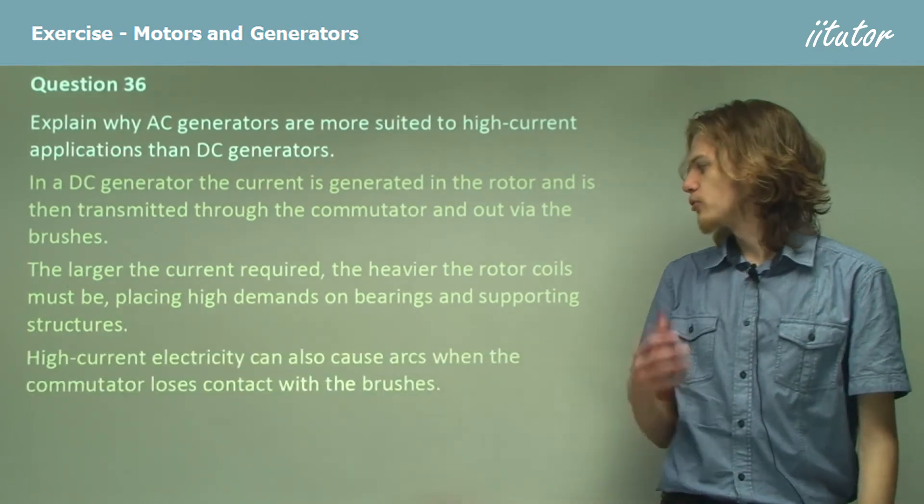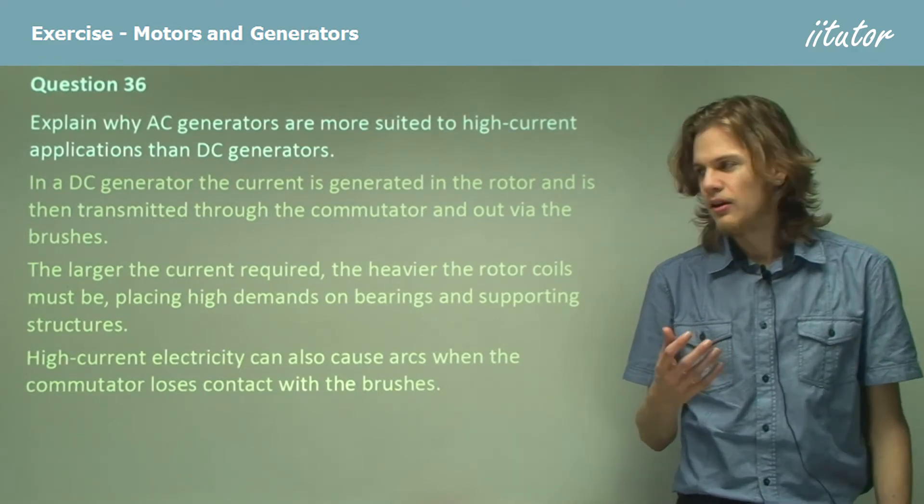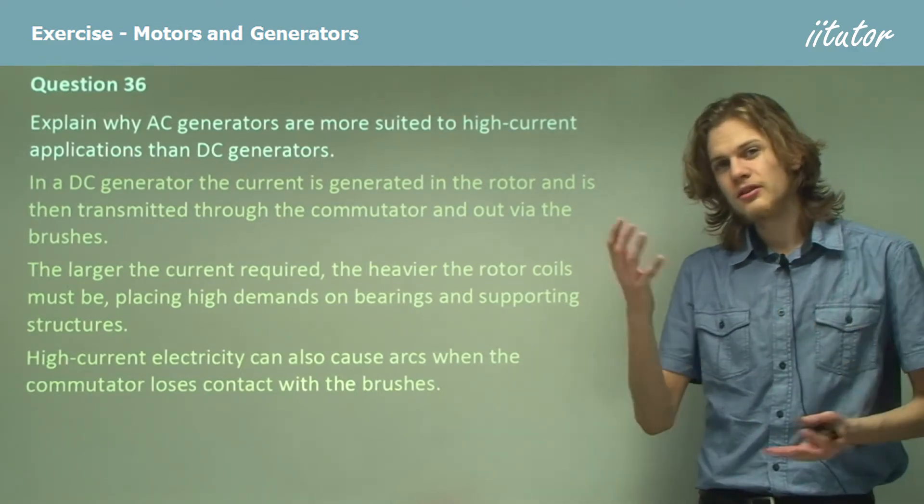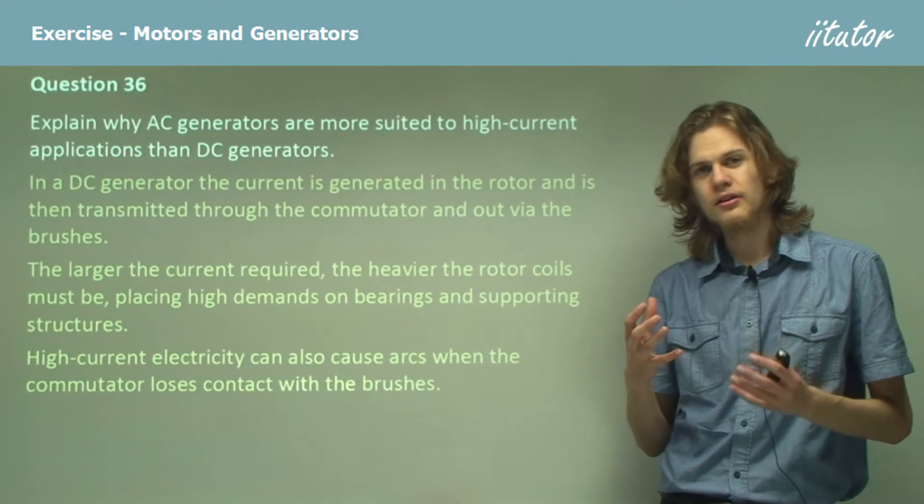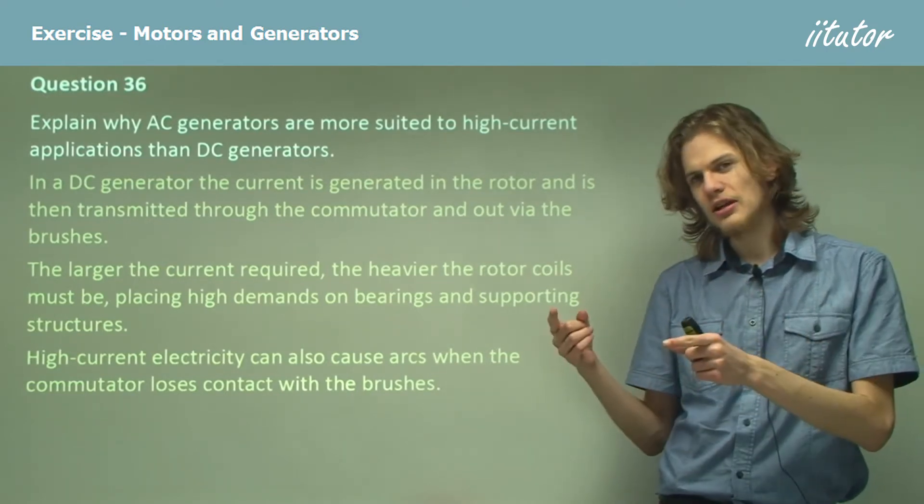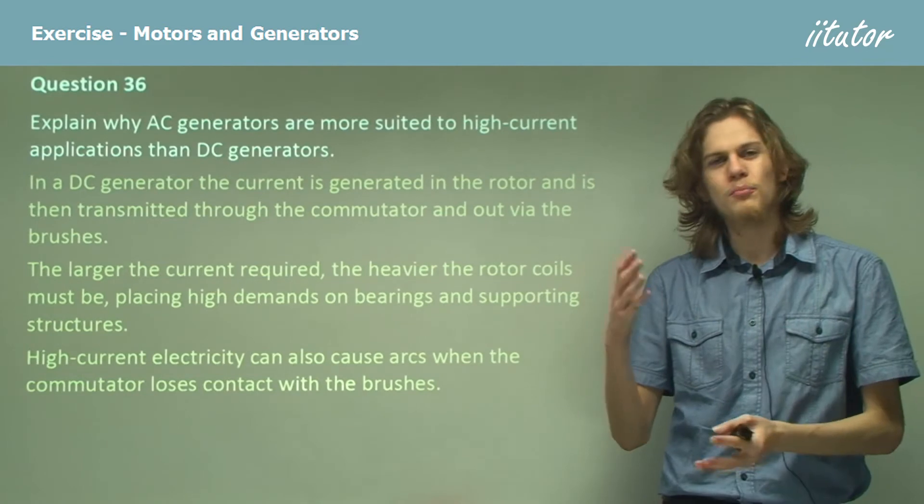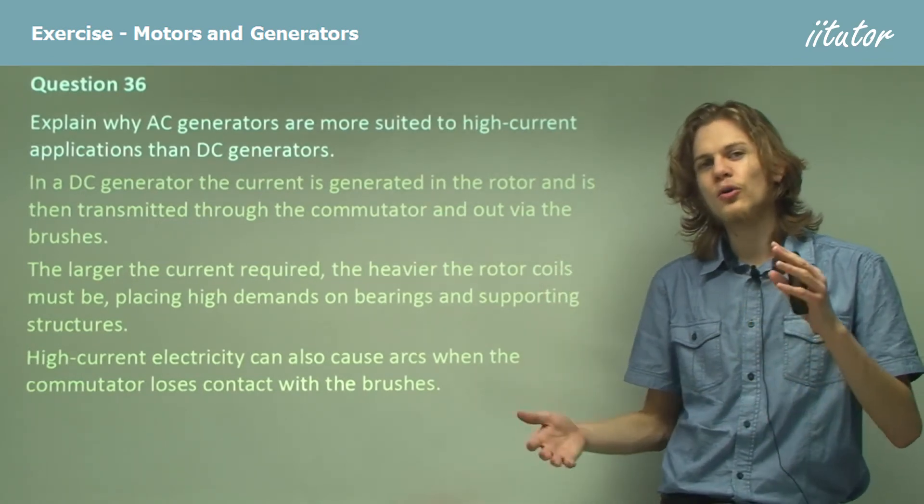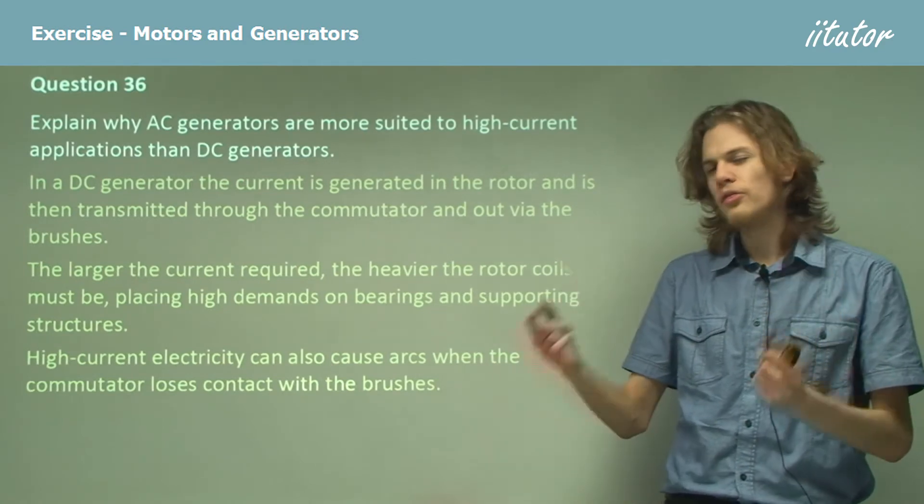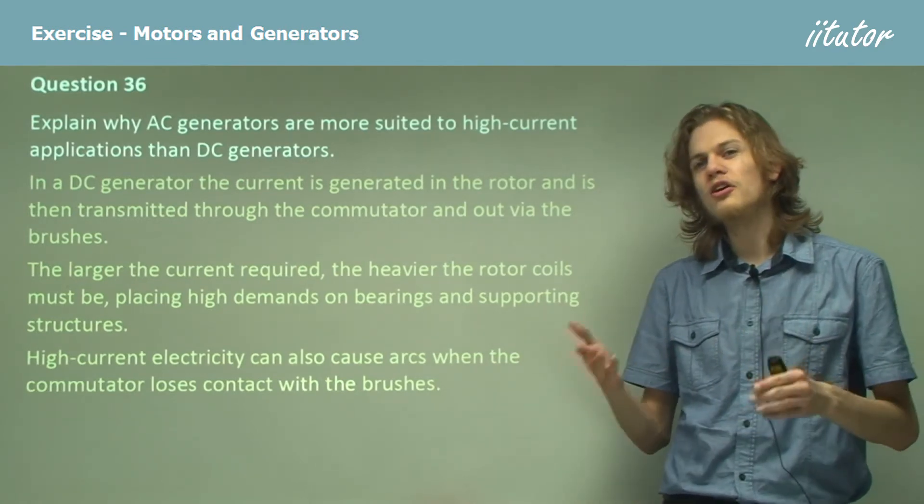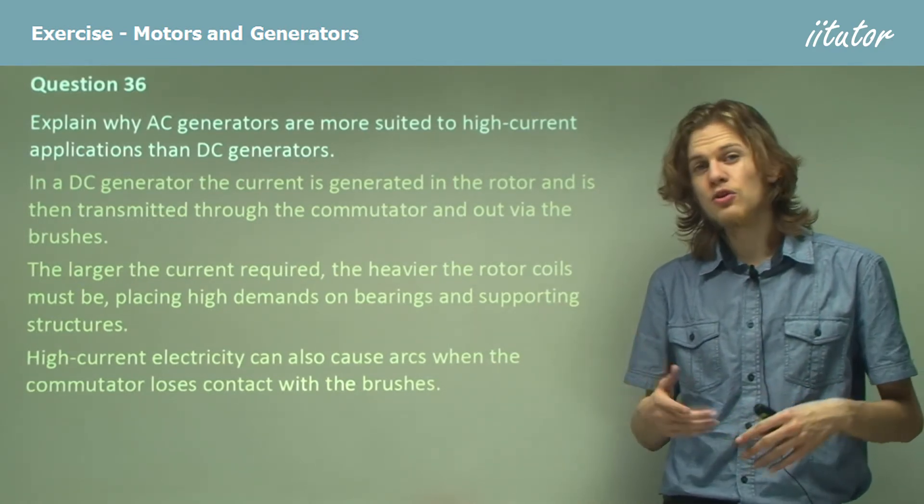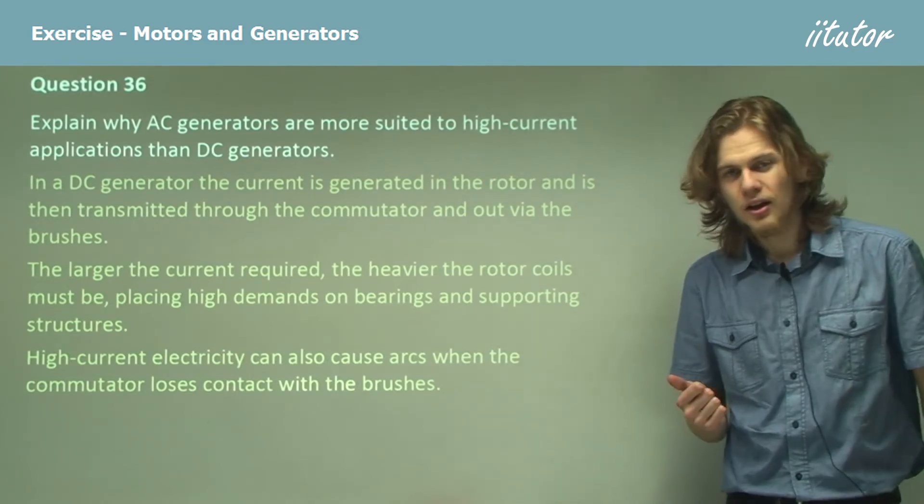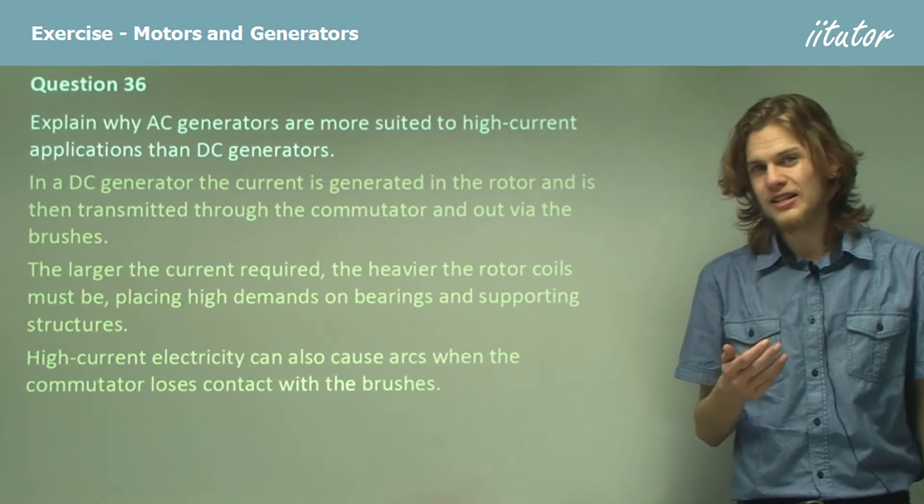High current electricity can also cause arcs when the commutator loses contact with the brushes. As the split ring commutator spins, for a moment the brushes are not in contact with the commutator, but there's a very high voltage between them. This can cause electric arcing, a process that loses a lot of energy.